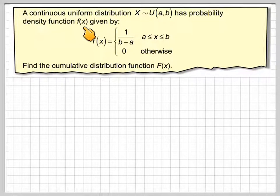Right, in this video we've got a continuous uniform distribution, x is U(a, b), has a probability density of f(x). f(x) is 1 over b minus a, x being between a and b, and 0 otherwise. Find the cumulative distribution function F(x).